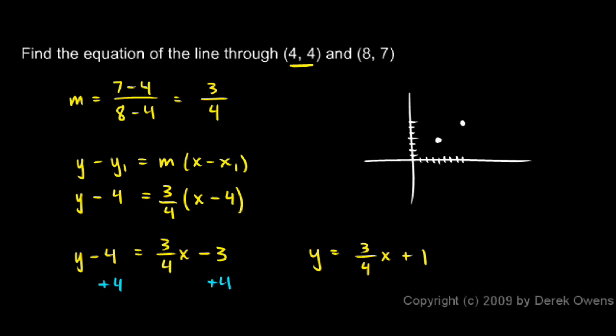You can see that this makes sense. A line like that is going to go through the y-axis at 1, a y-intercept of 1, and it will have a slope of 3 fourths.